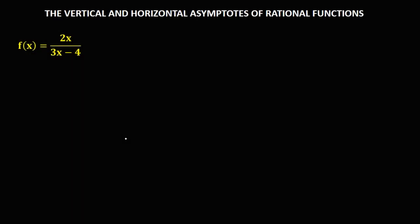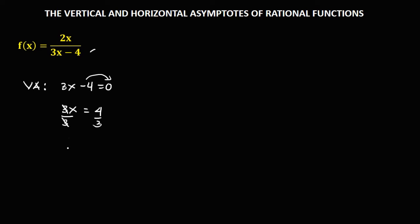Let's discuss the topic of vertical and horizontal asymptotes of rational functions. We have a given rational function, and to find the vertical asymptotes, we just need to equate the denominator to zero. So we have 3x minus 4 equals zero, then to solve for x, transpose the negative 4, so 3x equals positive 4, then divide both sides by positive 3.